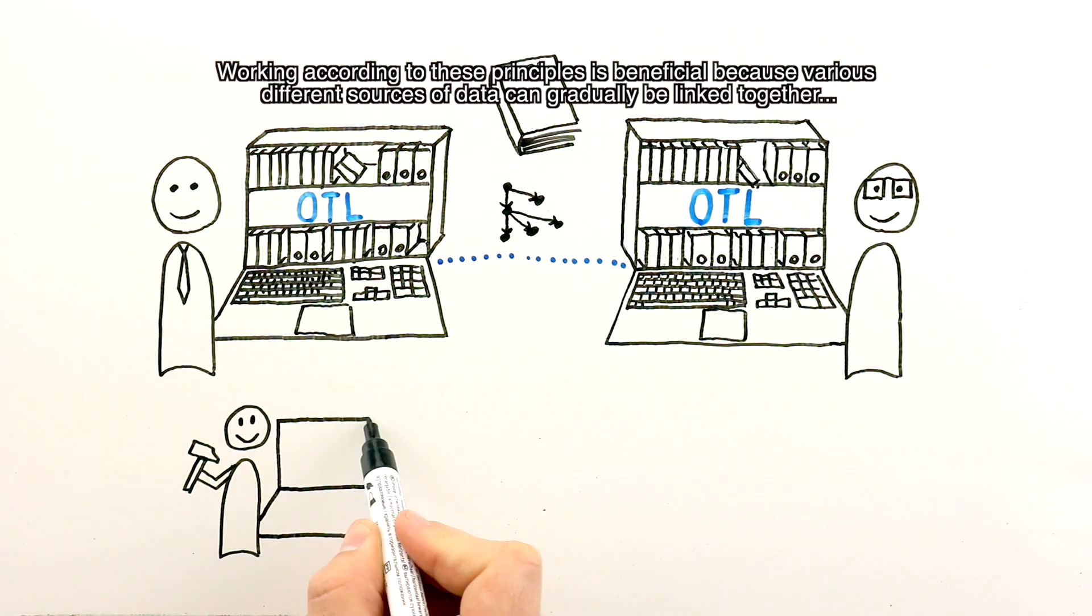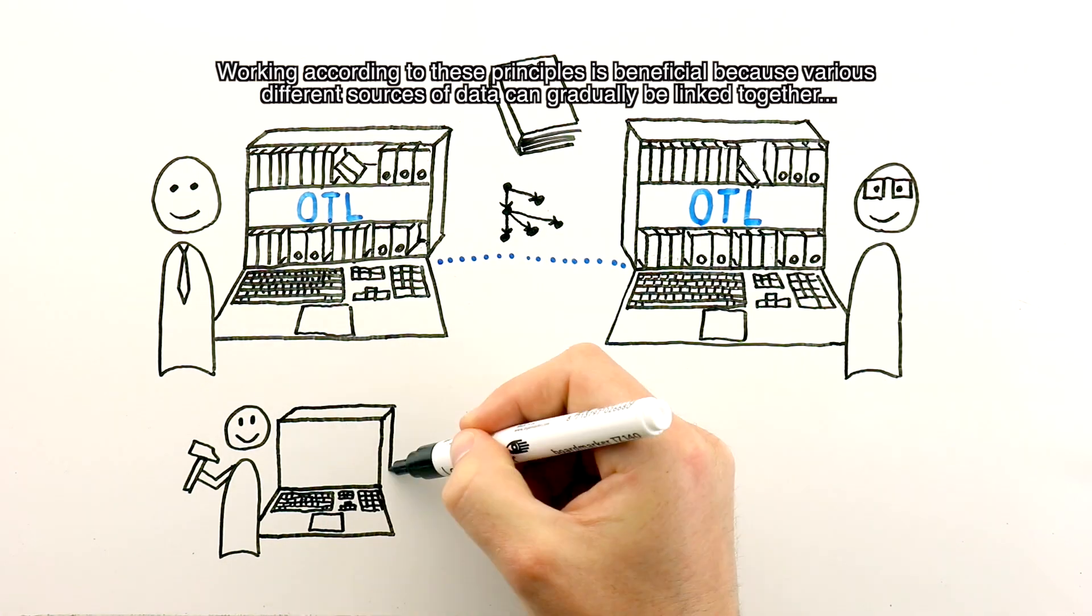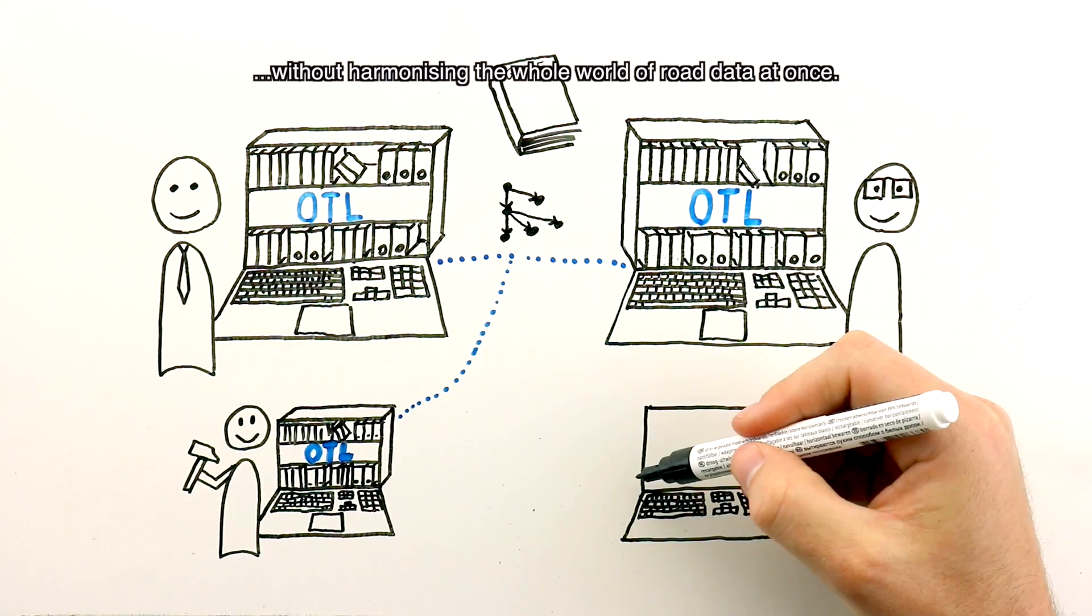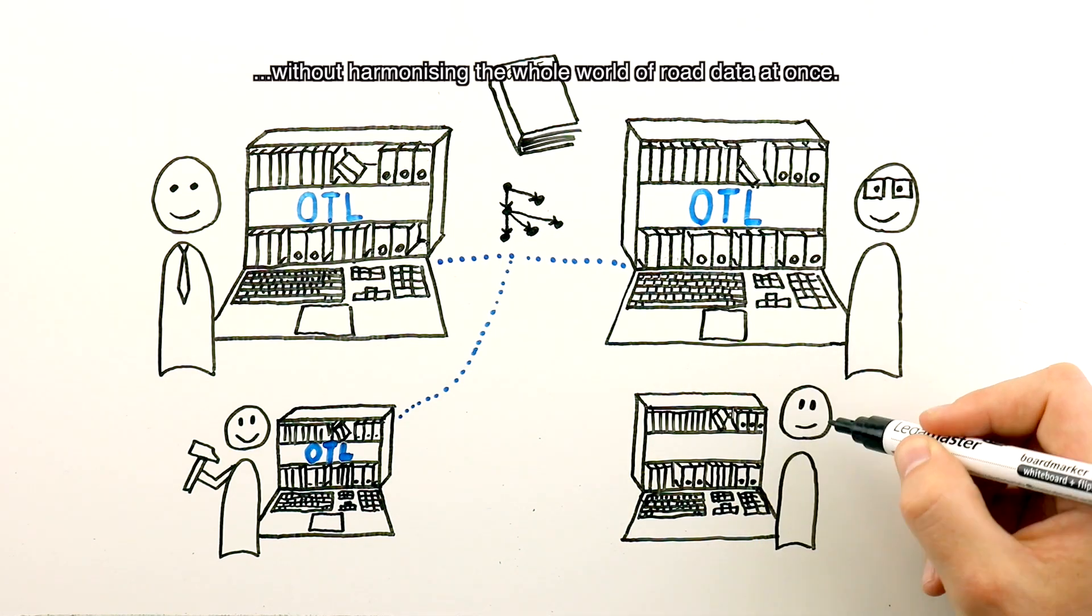Working according to these principles is beneficial because various different sources of data can gradually be linked together without harmonizing the whole world of road data at once.